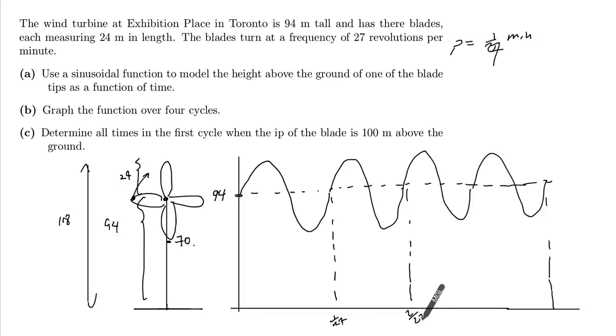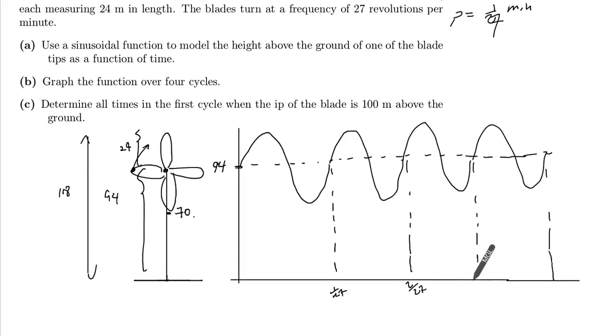This is going to be 2 over 27. And that right there is 3 over 27, which is reducible to 1 over 9. And this is 4 over 27.